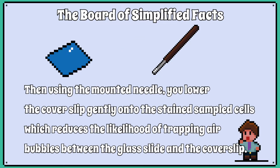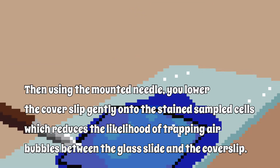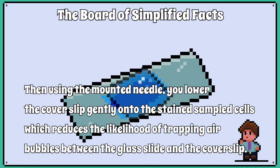Then, using the mounted needle, you lower the cover slip gently onto the stained sampled cells, which reduces the likelihood of trapping air bubbles between the glass slide and the cover slip.